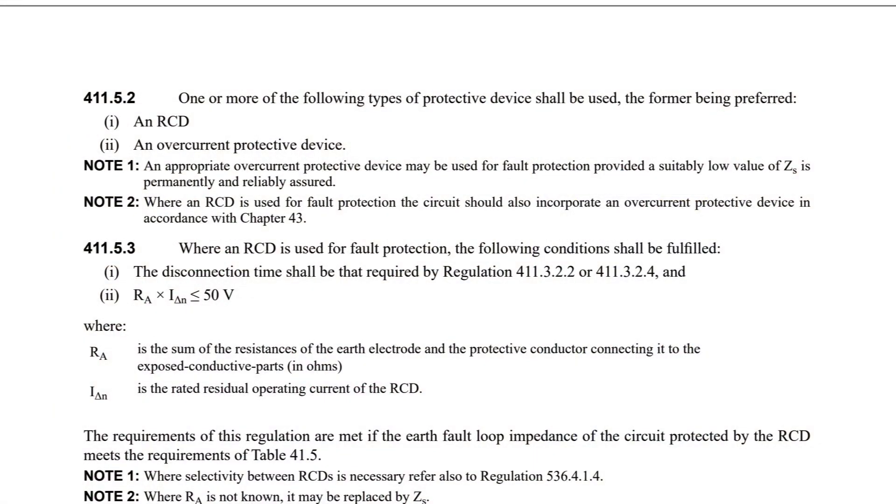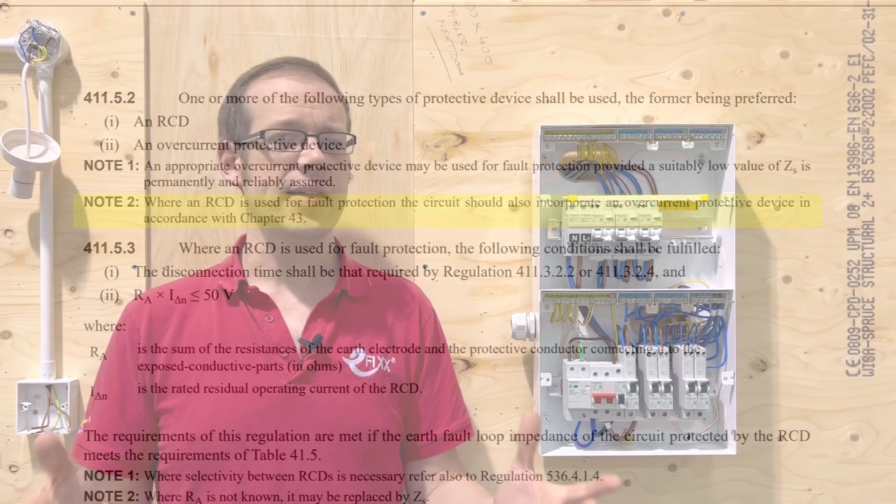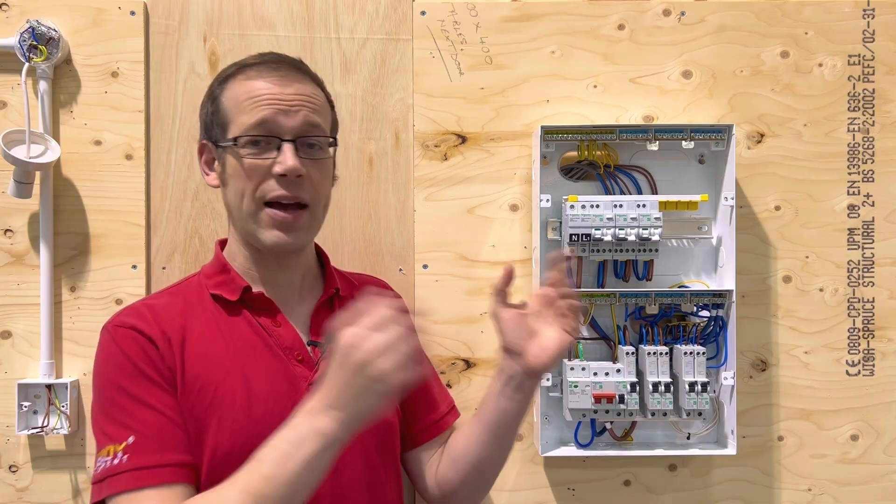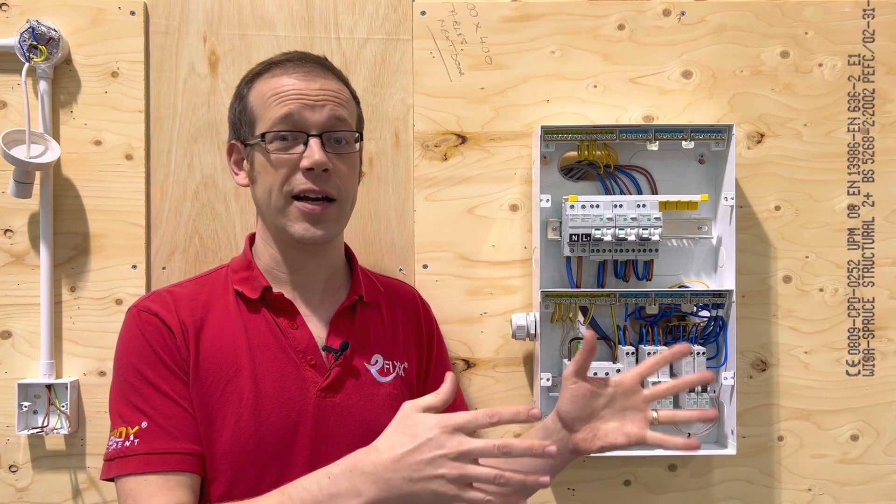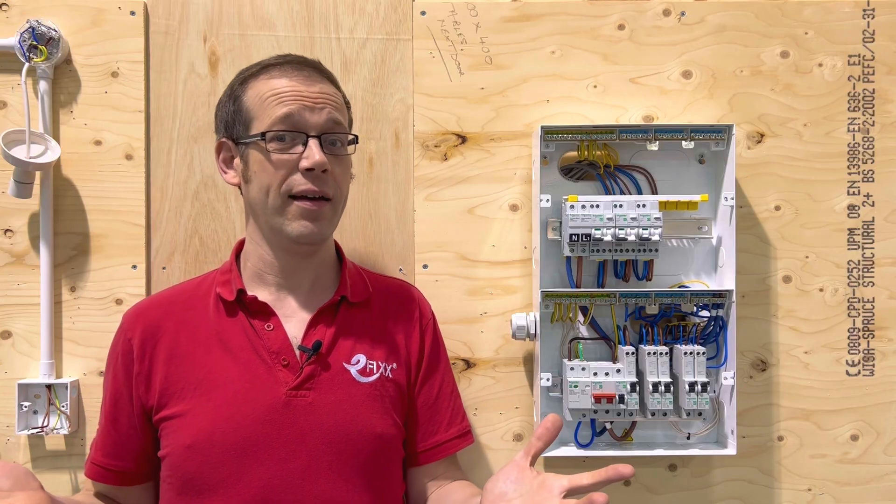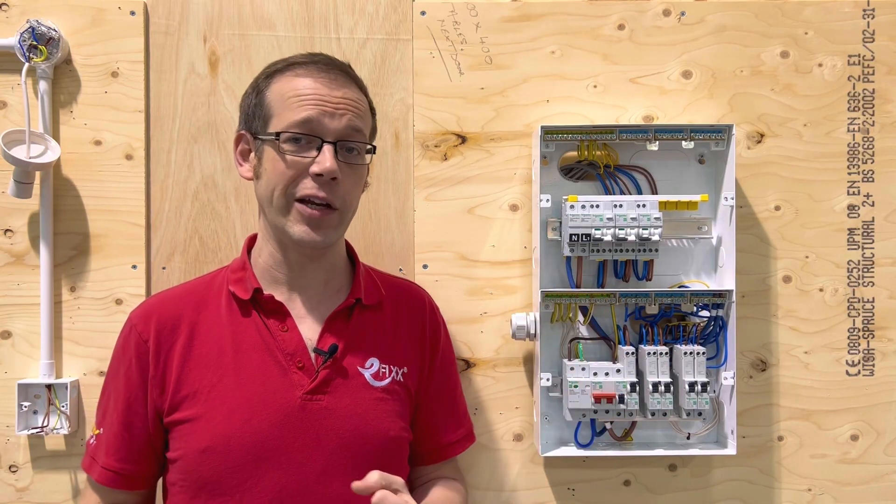Note 2 is also worth a look. That says where an RCD is used for fault protection the circuit should also incorporate an overcurrent protective device in accordance with chapter 43. So that makes sense as an RCD by itself won't monitor for overcurrent. It could have thousands of amps flowing through the line conductor and as long as it's exactly the same amount flowing back down the neutral it won't care and it won't trip even if the building is burning down around it.